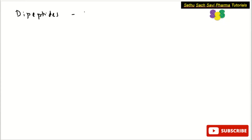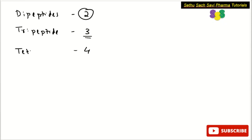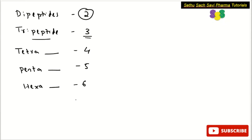In the case of a tripeptide, the number of amino acids is three. When four amino acids are linked by a peptide bond, that is called a tetrapeptide. Five amino acids make a pentapeptide, six make a hexapeptide, seven make a heptapeptide, and eight amino acids linked by a peptide bond make an octapeptide.